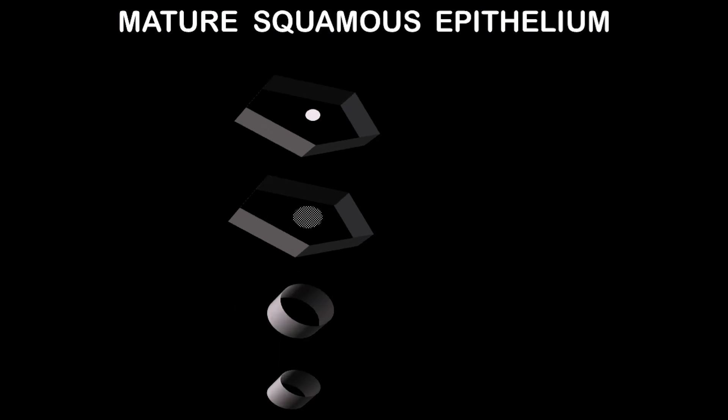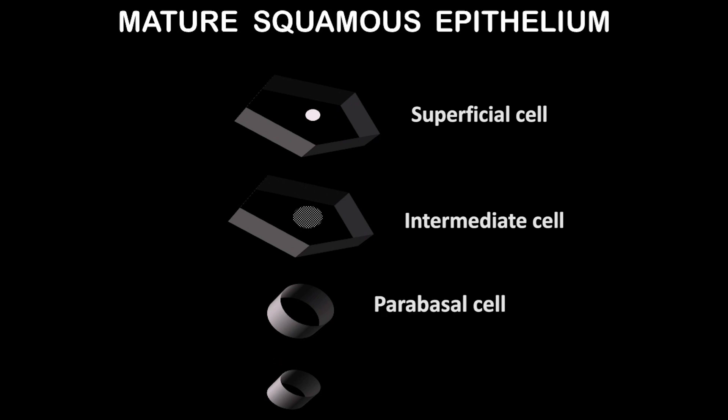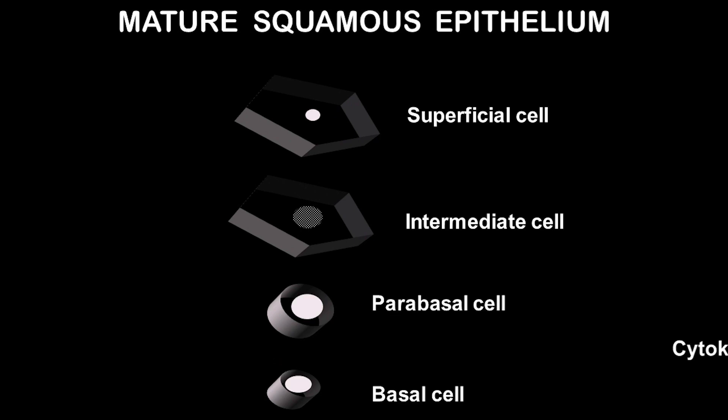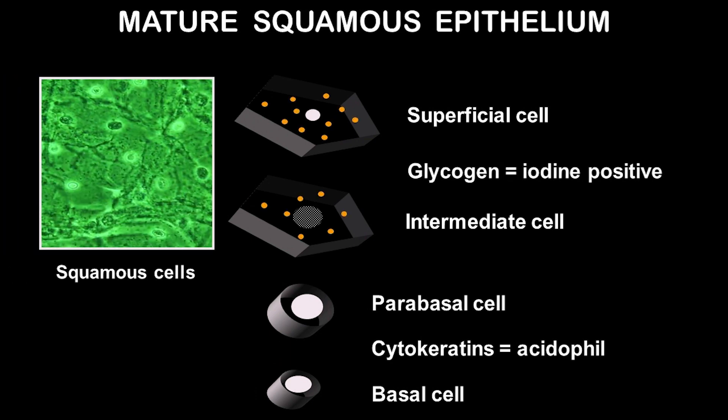Mature squamous epithelium is multi-layered, consisting of superficial cells, intermediate cells, parabasal cells, and basal cells. The parabasal and basal cells contain cytokeratins which are acidophilic, while the superficial and intermediate cells contain glycogen, which absorbs iodine and becomes iodine positive.